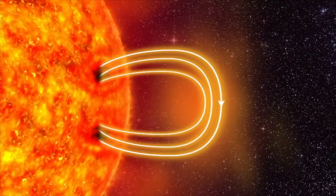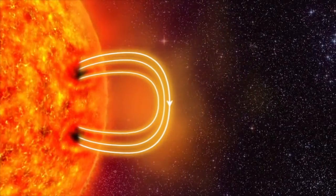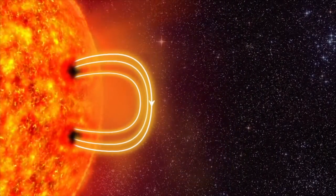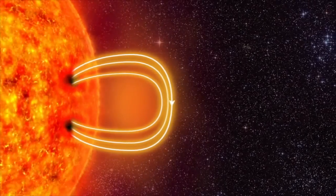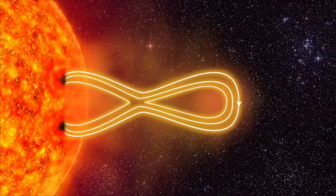The electrically charged gas is called plasma. The plasma drags the magnetic field further outwards. The magnetic field stretches and twists like a rubber band, and then the rubber band breaks.